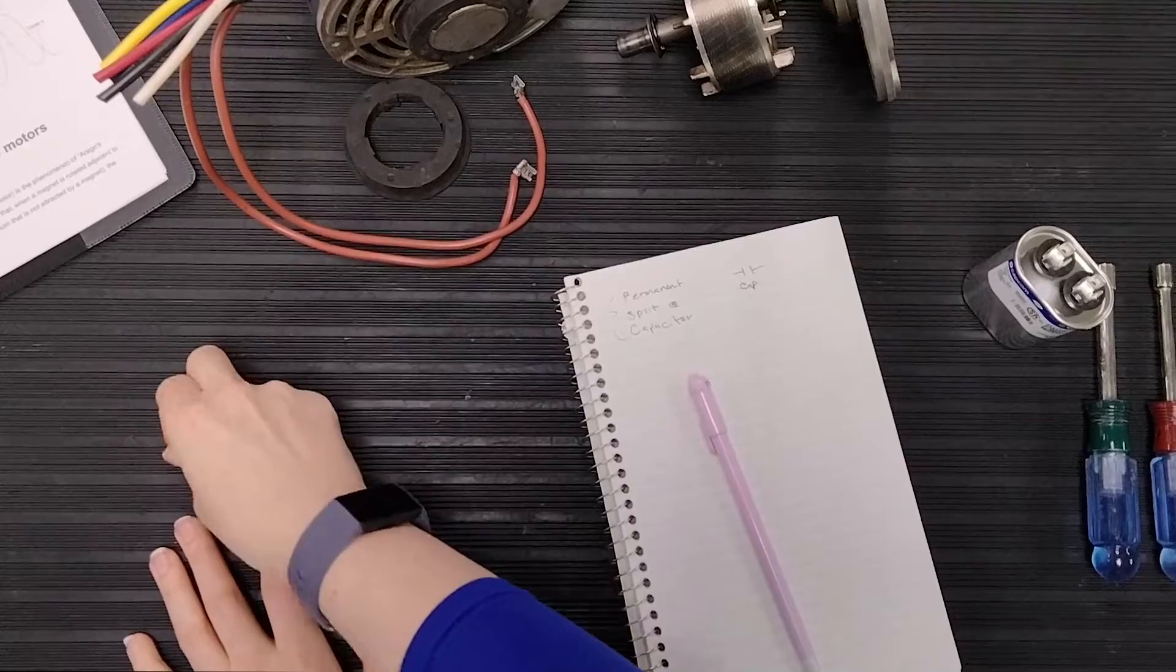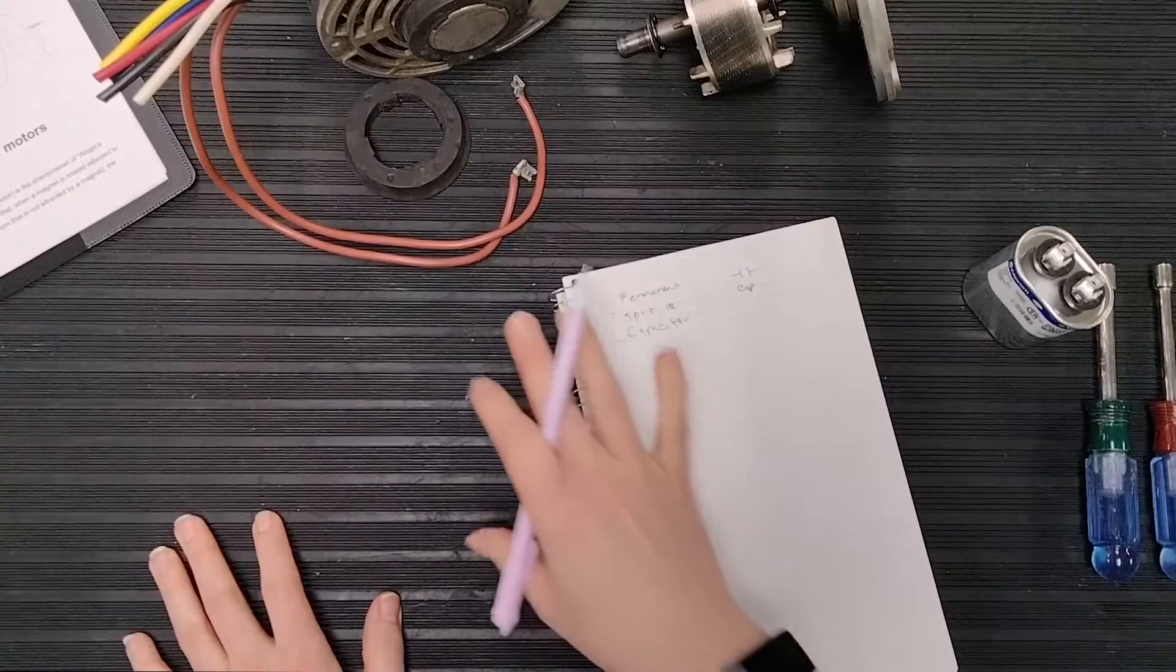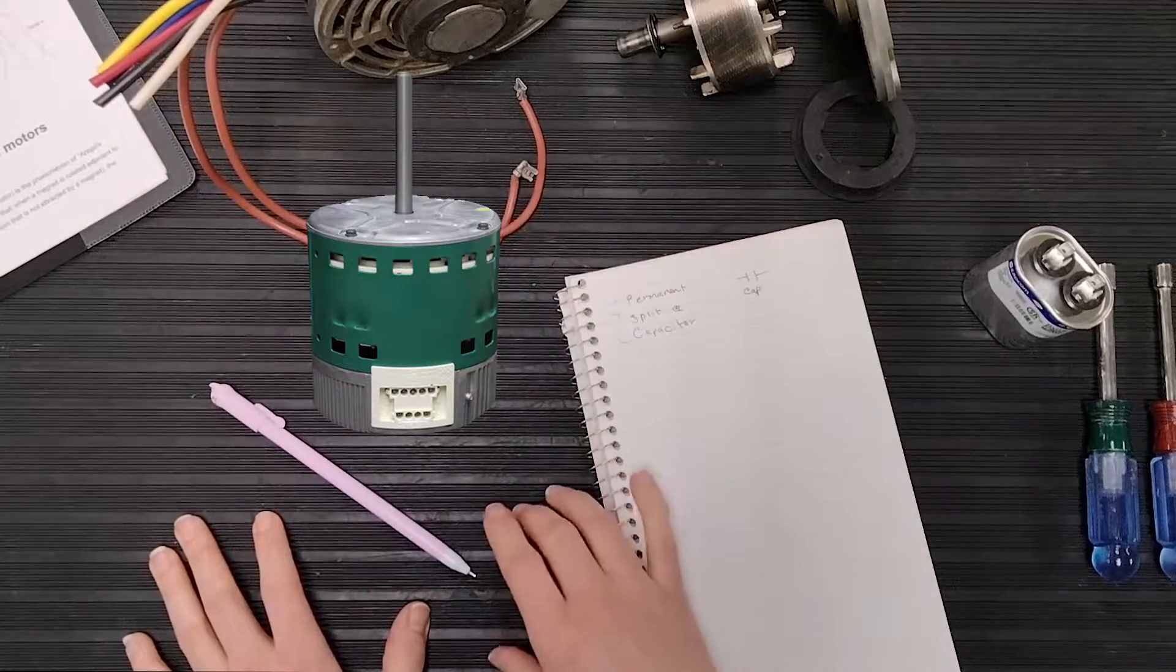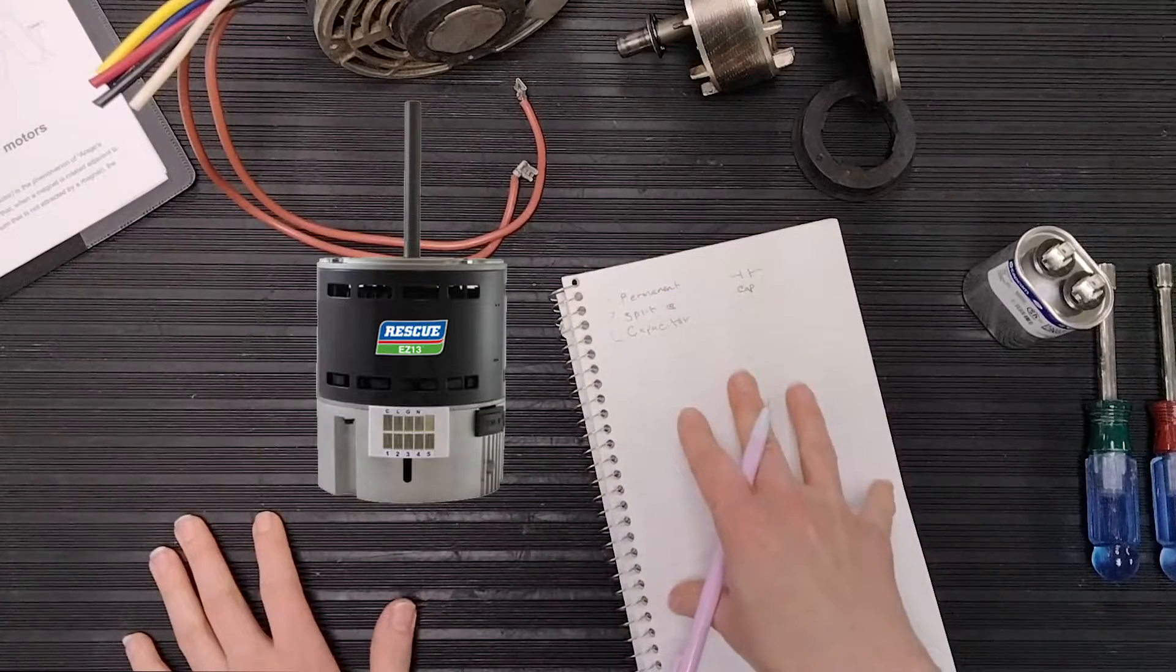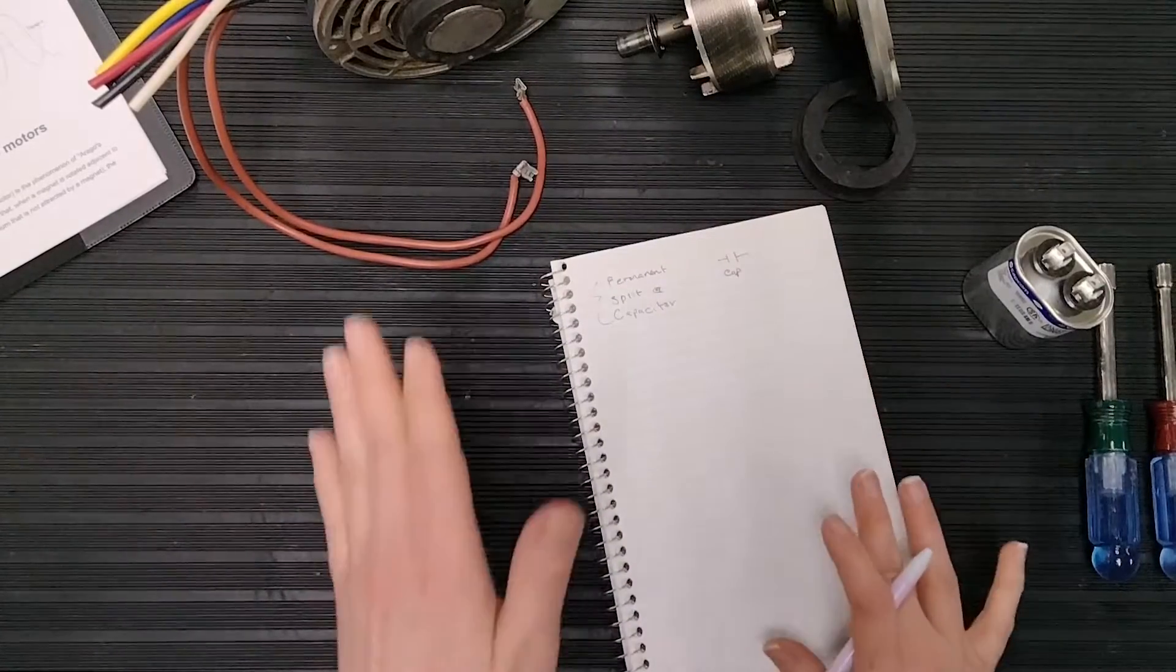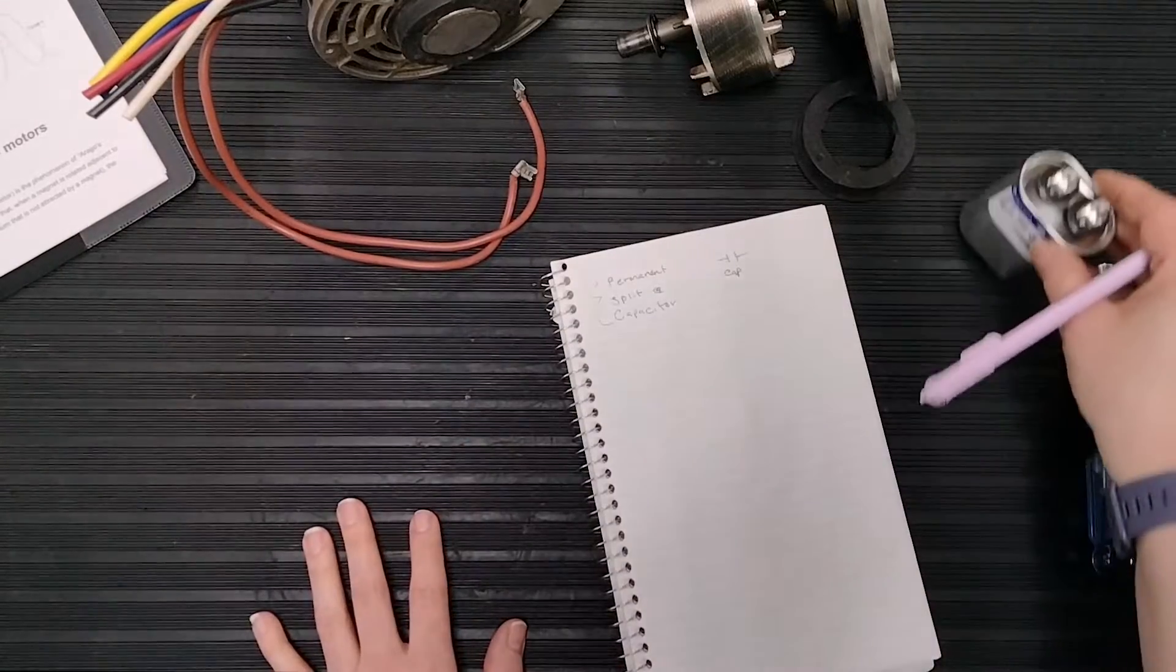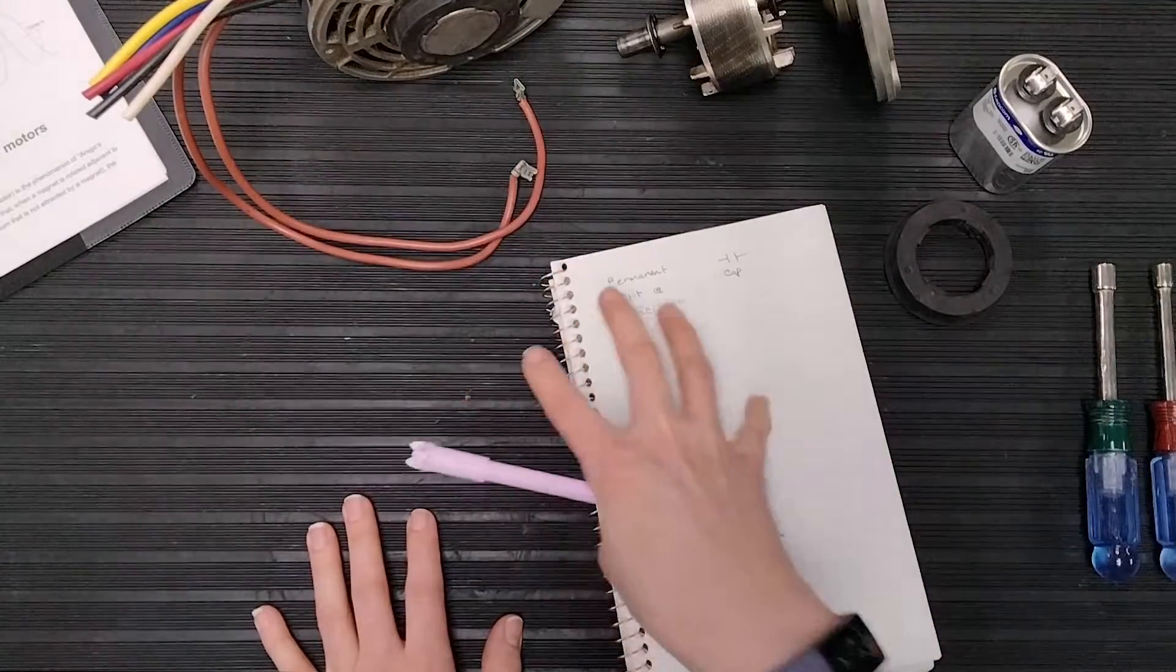Now, because a lot of new laws have passed for efficiency, most units now will have a DC driven motor, which will have some sort of either ECM or electronic communicating motor, or it will have an X13, which is a constant torque motor. It will have some sort of variable speed in there and those are going to be different from the PSC motors.